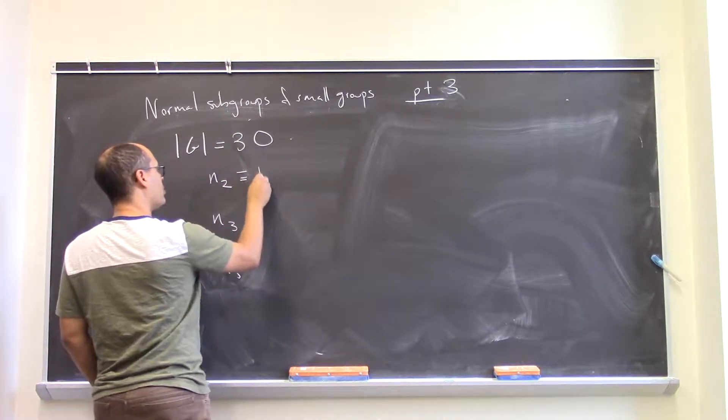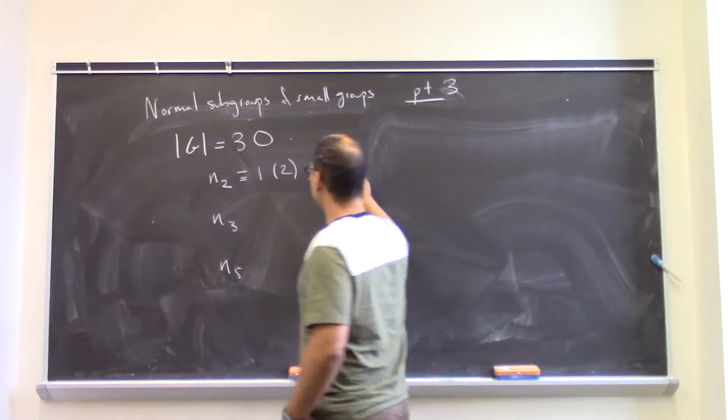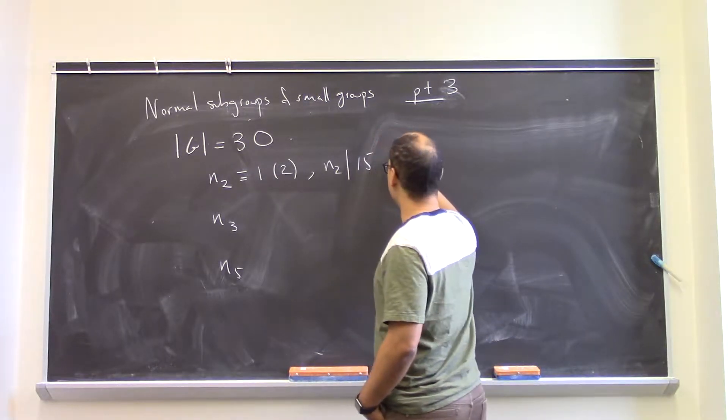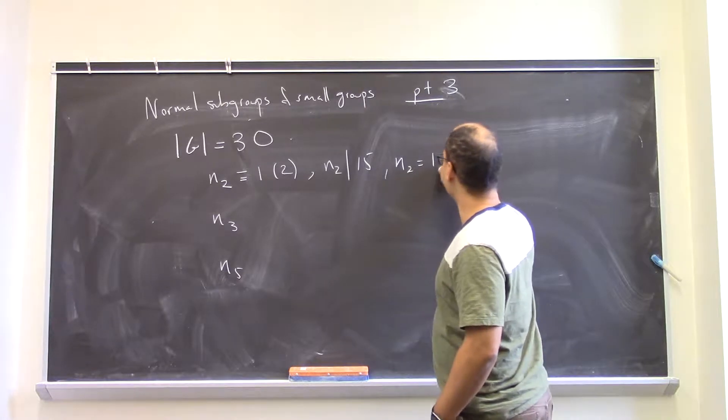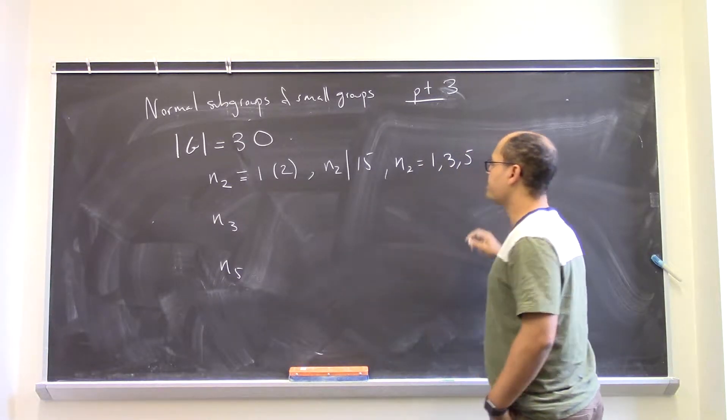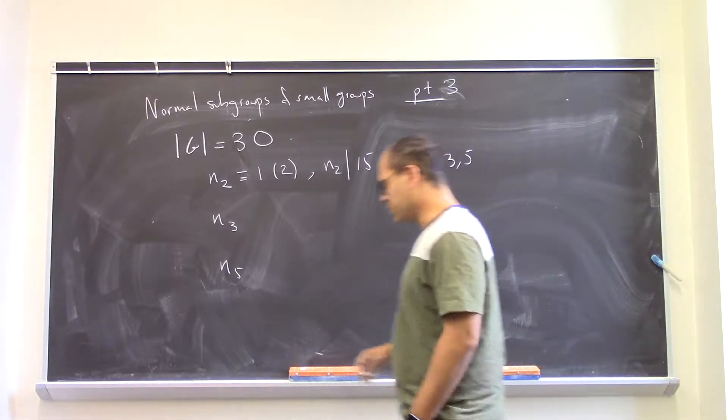N2 is congruent to 1 mod 2, and N2 has to divide 15, which gives me a lot of possibilities. N2 could therefore be 1, 3, or 5—odd numbers which divide 15.